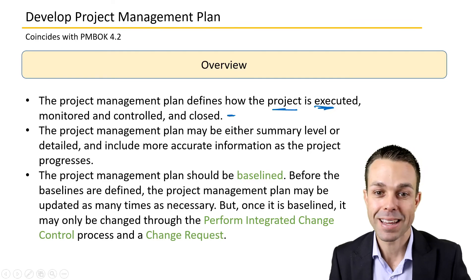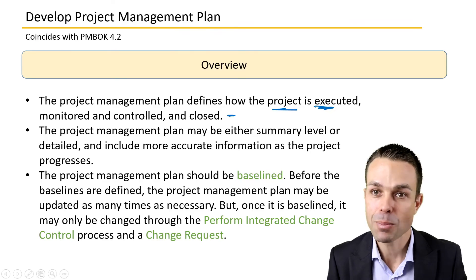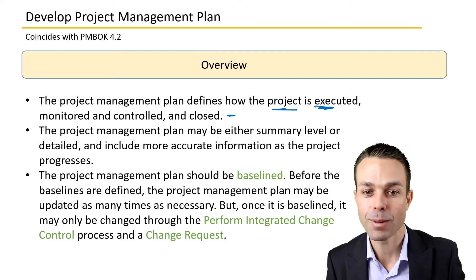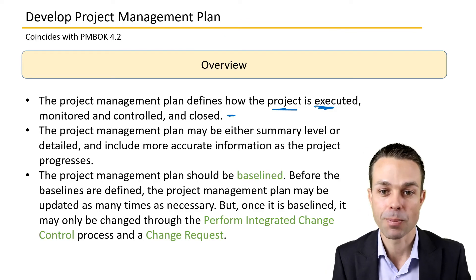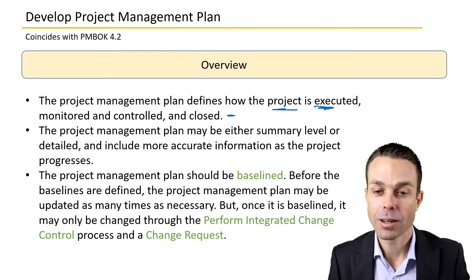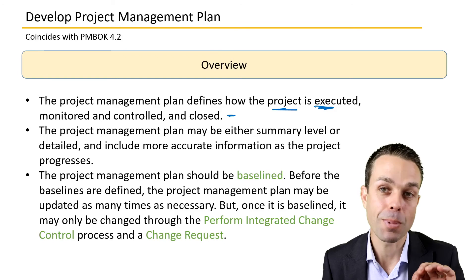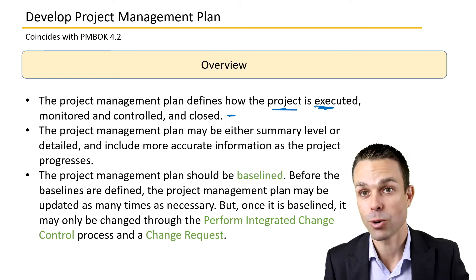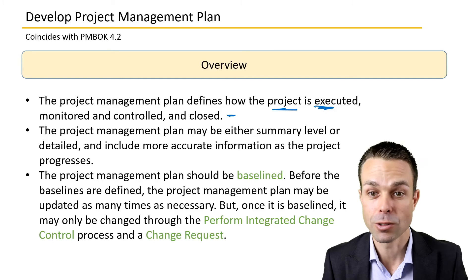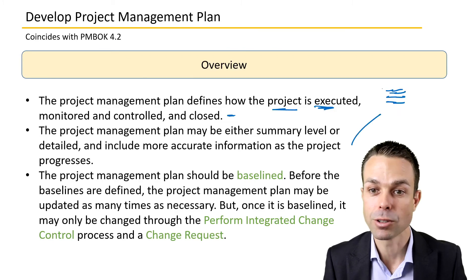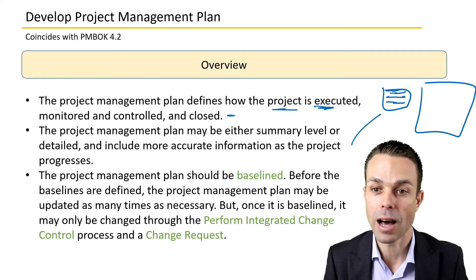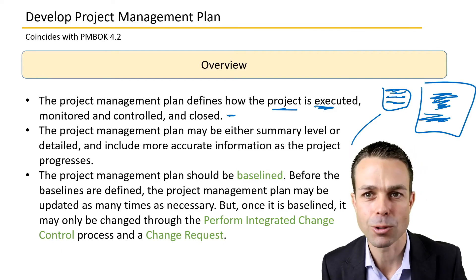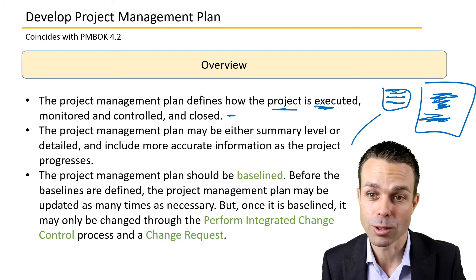The project management plan can be either a summary level or it can be detailed and include more accurate information as the project progresses. Nothing is set in stone — it depends on the organization, the project, and the project manager. Is it just a few lines to note things down, or is it a large comprehensive document with all the knowledge areas specifically detailed?